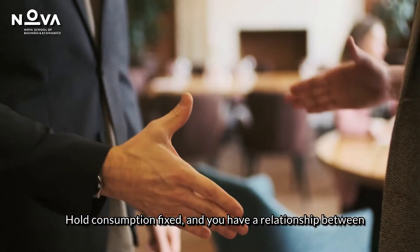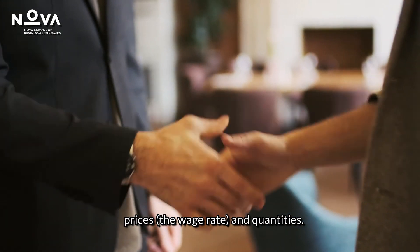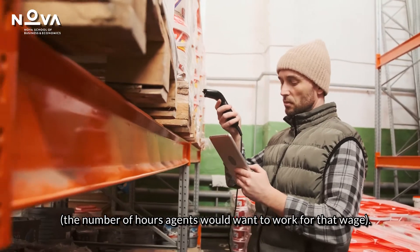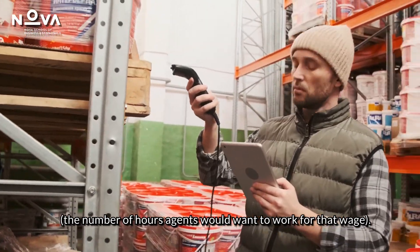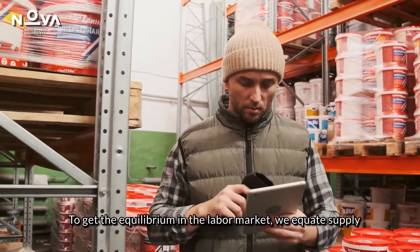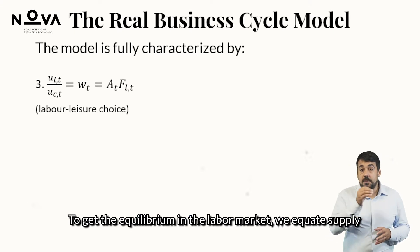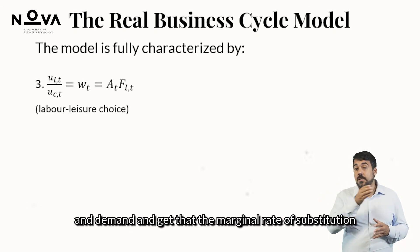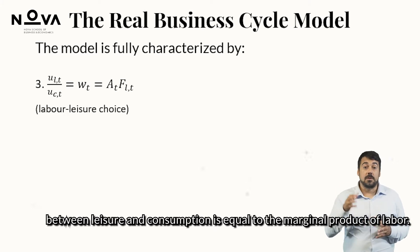Holding consumption fixed, you have a relationship between prices — the wage rate — and quantities — the number of hours agents want to work for that wage. To get equilibrium in the labor market, we equate supply and demand, obtaining that the marginal rate of substitution between leisure and consumption equals the marginal product of labor.